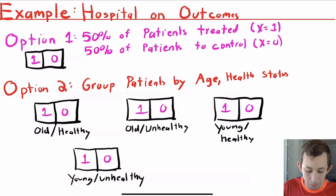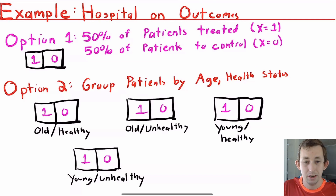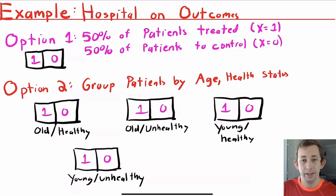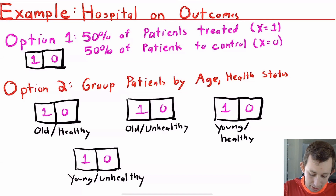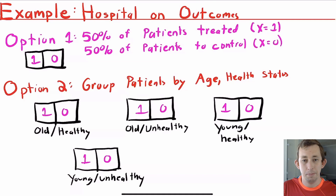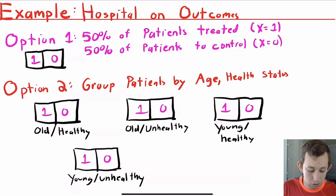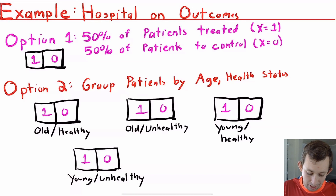Well, what you could do is you could group patients by their age and their health status. Here we'll just say age is young or old, and health status is healthy or unhealthy, just to make it a little easier. So before you draw names out of the hat, you take everyone's name and you put them into different buckets to draw out of. So rather than drawing out of one hat, you're now drawing out of four hats: the old healthy hat, the old unhealthy hat, the young healthy hat, and the young unhealthy hat. And so you just draw fewer names out of each hat.